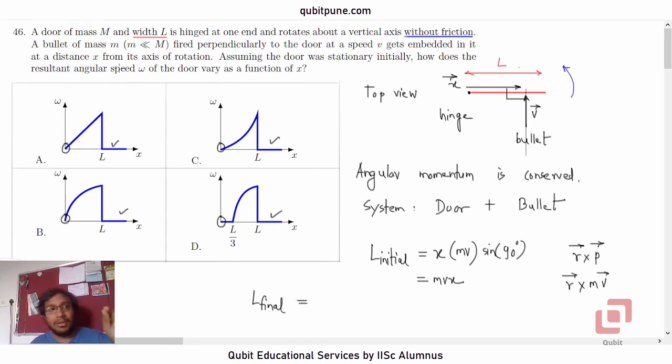We are now going to ignore the mass of the bullet for the mass of the system considering door plus bullet, because they are saying bullet of mass m which is much smaller compared to mass of the door. That condition signifies that the total mass of the system post impact can be approximately considered as mass of the door itself. We are going to assume that the moment of inertia of the system is actually moment of inertia of the door itself. The final angular momentum will be I omega.